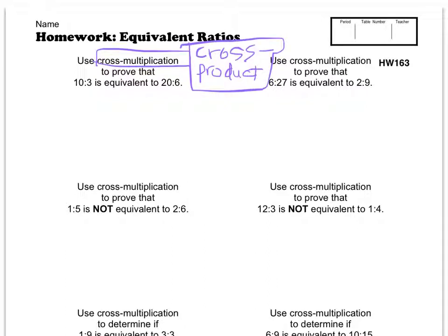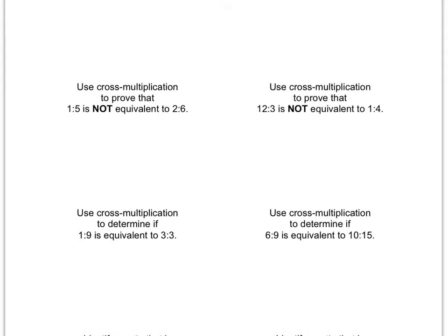Anyways, all of these problems, this one has you prove that this ratio is equivalent to that ratio, so you'll get a true statement on this one. This one has you do the same over here. This one has you use cross multiplication to show that they are not actually equivalent, so you'll get a false statement, something like 3 equals 4, but it'll probably have different figures than 3 and 4.